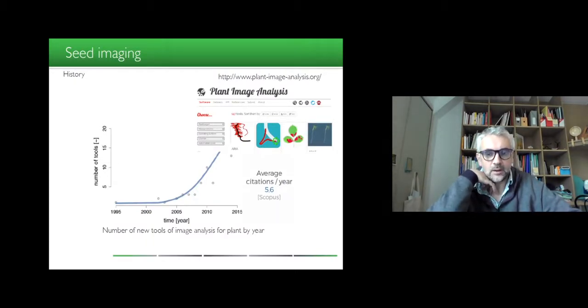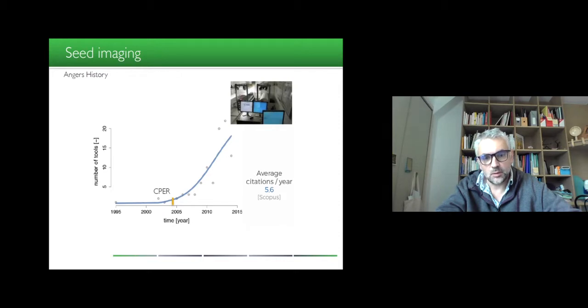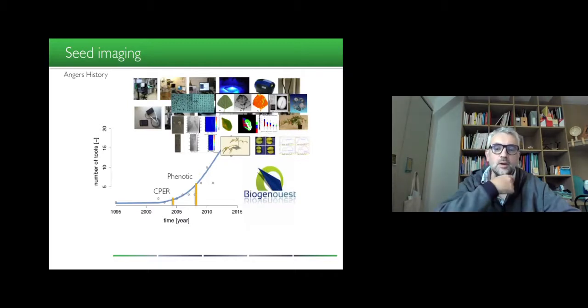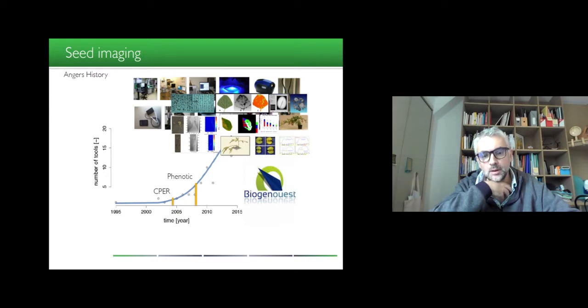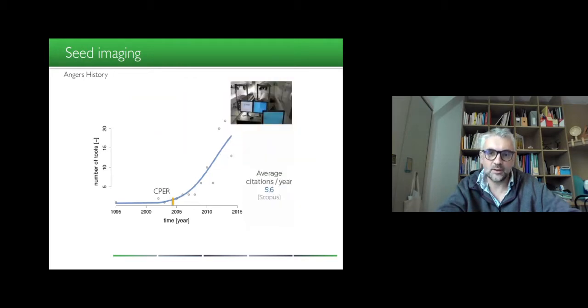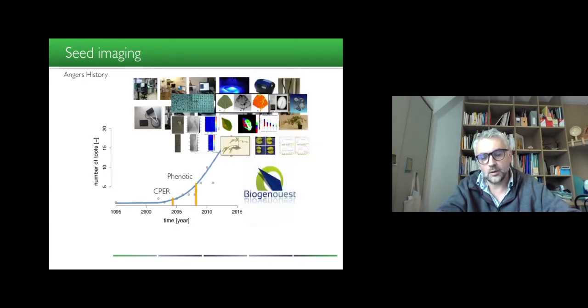Seed imaging like plant imaging has undergone a burst of activity in the mid 2000s, and in our institute in Angers, we started studying this topic at that period and started to develop our own platform, the Phenotic platform at the end of the 2000s, developing many different types of imaging systems. The first system was dedicated to seed imbibition and now we can monitor many other traits of seeds and seedlings, the early stage of plant development. This video is about this variety of techniques.